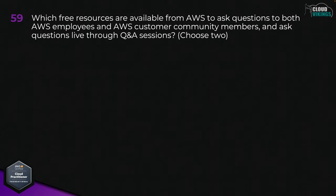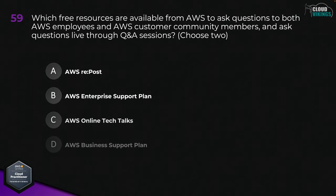Question fifty-nine: which free resources are available from AWS to ask questions to both AWS employees and AWS customer community members, and ask questions through live Q&A sessions? Choose two. Options are: A, AWS Repost; B, AWS Enterprise Support Plan; C, AWS Online Tech Talks; D, AWS Business Support Plan; or E, Amazon CloudTrail. The two correct answers are A, AWS Repost, and C, AWS Online Tech Talks.